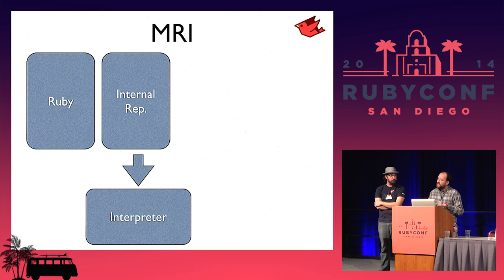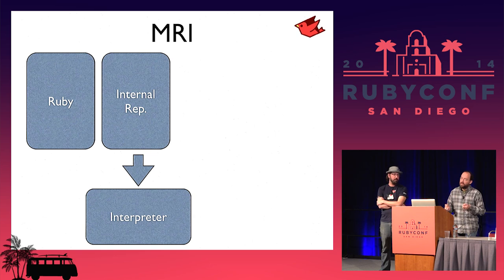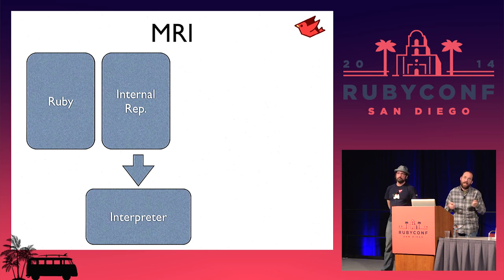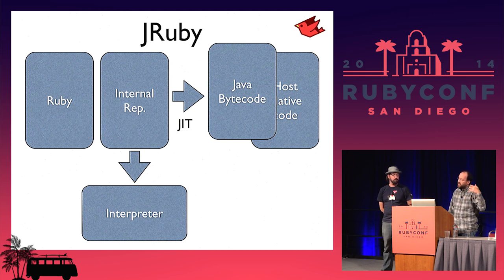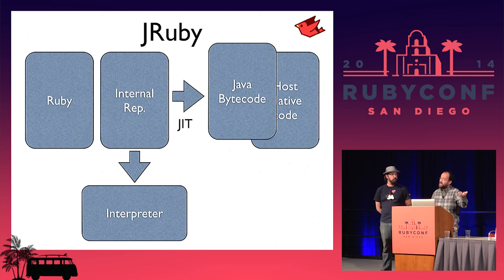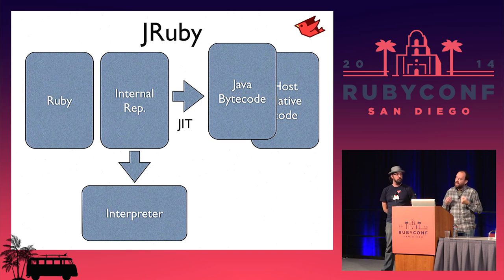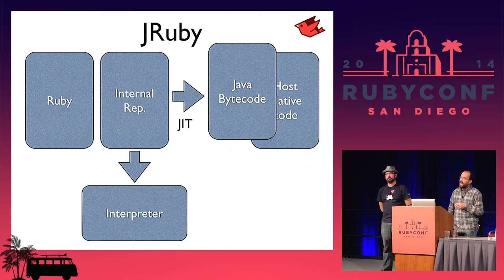This is the current state of CRuby: they parse Ruby, generate virtual machine instructions representing Ruby semantics, and then an interpreter walks those instructions. Matz has hinted they'll probably make a JIT in the next year or two. JRuby's current broad architecture is similar — we parse Ruby, generate VM instructions representing Ruby semantics (though different from MRI's), then run an interpreter. If we execute a method a lot, we pass it off to the JIT, generate Java bytecode, and then Java optimizes it.